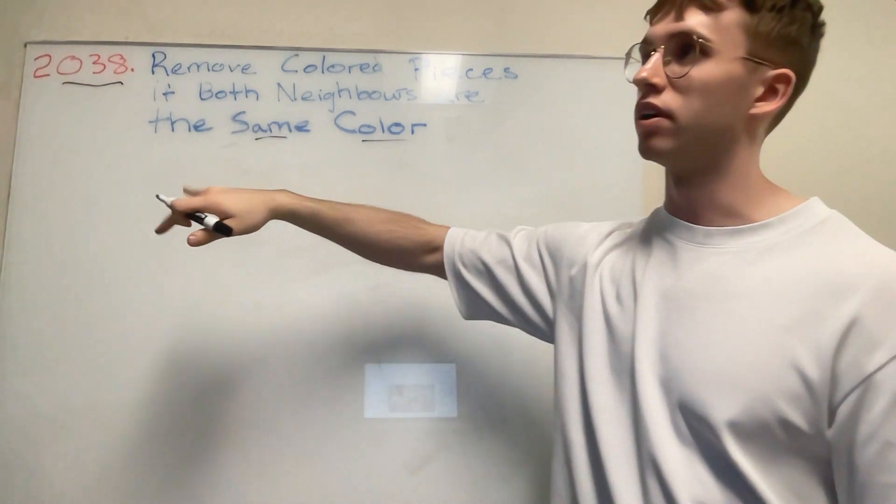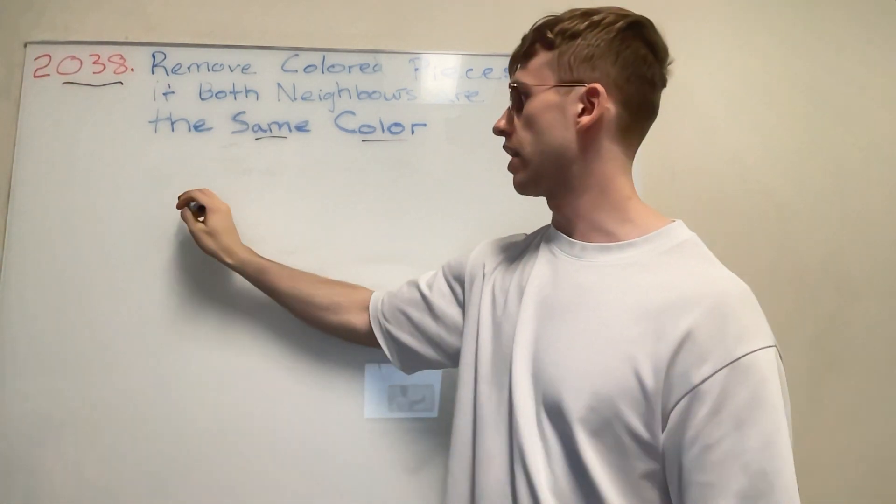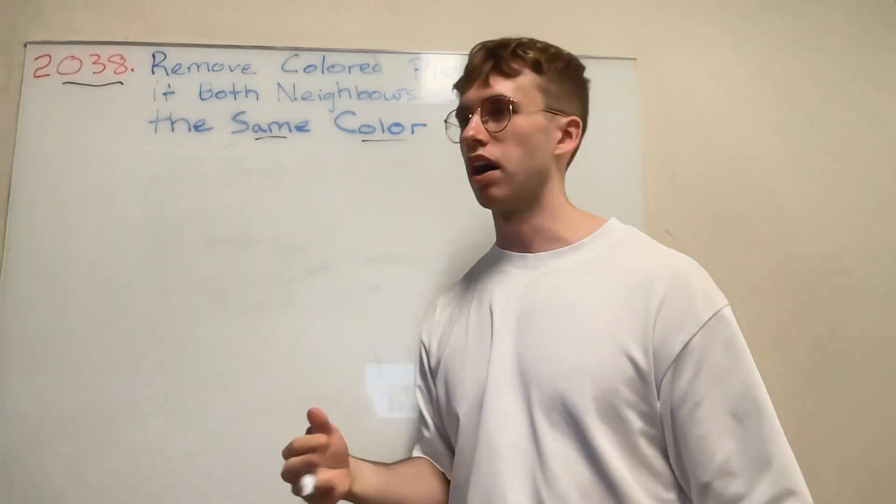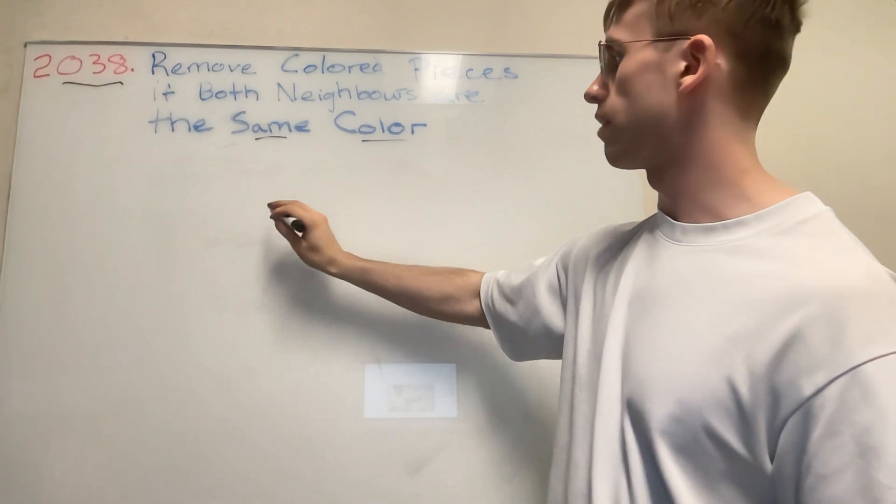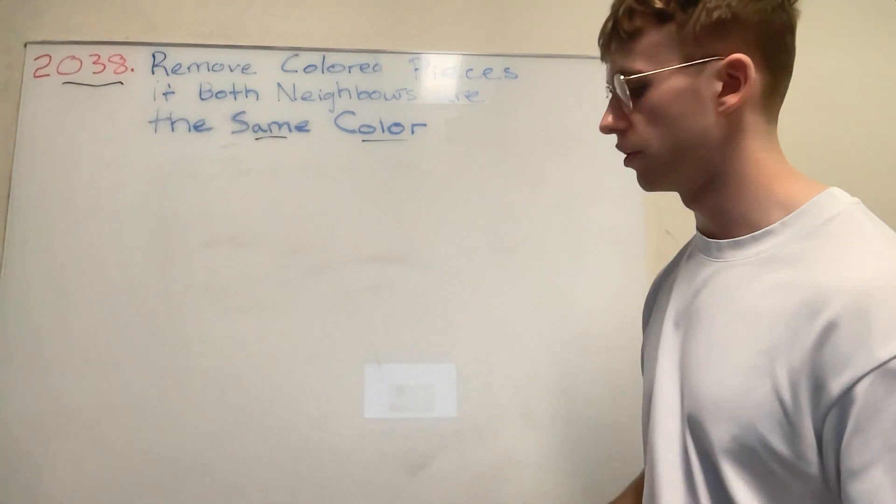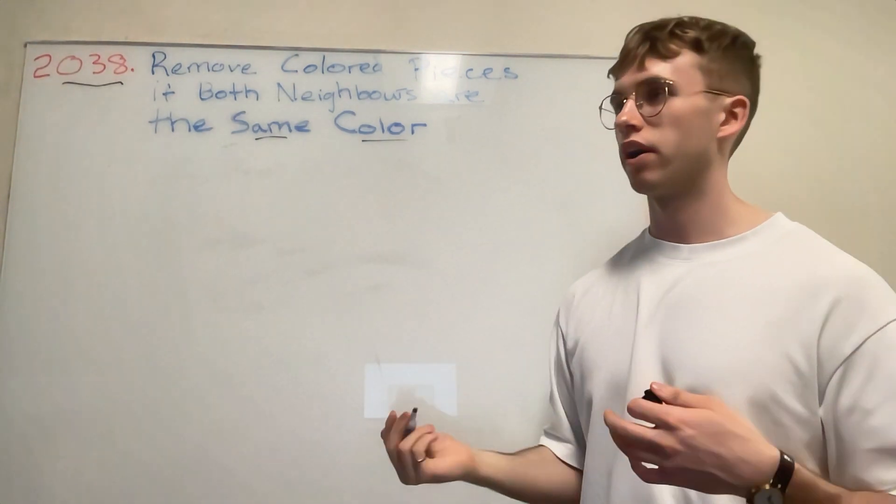Naturally, outside of the class and method declaration, in our method we would be given an input of something called colors as our input string. From there, what we want to return is whether or not Alice wins.